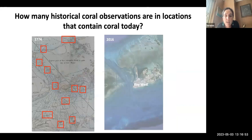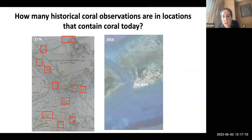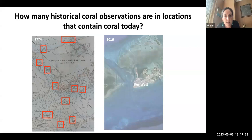In 1776, the American Revolution happened and George Gould was sent back to the UK via Jamaica as a prisoner of war, so the mapping effort stopped. But he left behind really great high-resolution maps, which were obtained from the UK Admiralty Library. The ecological question we're able to ask with this is about the persistence of coral reefs over time: how many historical coral observations from the 1770s are in locations that contain coral today?